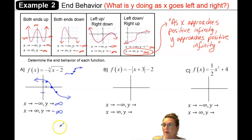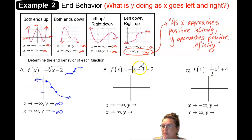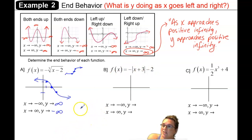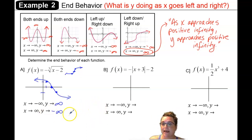Go ahead and pause the video and try example b on your own. This is an absolute value function with transformations that take us down 2, to the left 3, and reflected in the x-axis. After you've sketched that graph and described the end behavior, resume the video and we'll go over that one together.